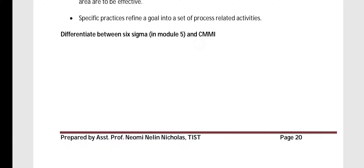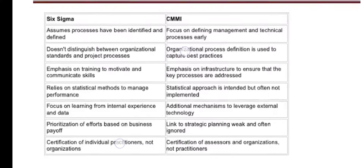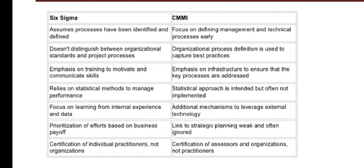Next is to differentiate between 6 Sigma — the statistical model discussed in module 5 — and CMMI. First, 6 Sigma assumes that processes have already been defined and identified, whereas CMMI focuses on defining the management and technical processes early, emphasizing identification and definition. Second, 6 Sigma doesn't distinguish between organizational standards and project processes, whereas in CMMI the organizational processes are very much stressed, capturing best practices.